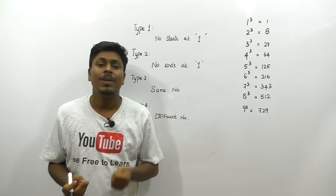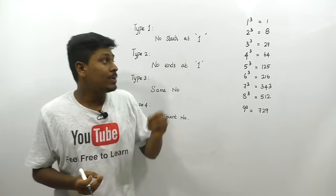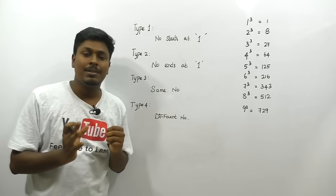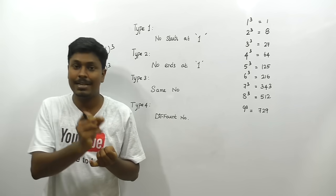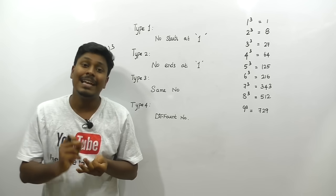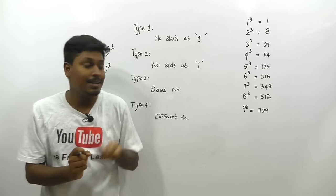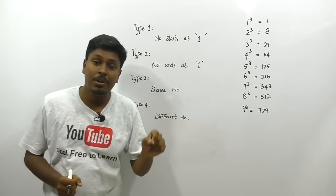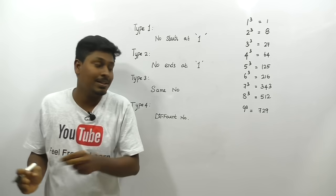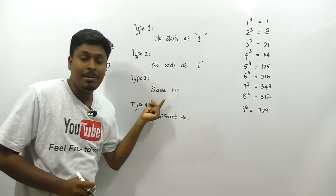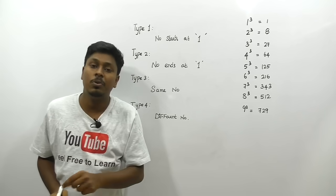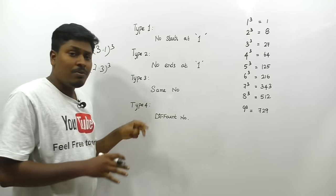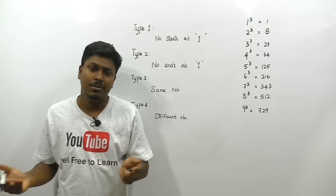There are four types to cube a number. Type 1: the number that starts with 1 — for example, 11³, 12³, 19³. Type 2: the number that ends in 1 — like 21³, 31³, 41³, 51³. Type 3: same digits — like 22³, 33³, 44³, 55³. Type 4: different digits — like 72³, 84³, or 93³.